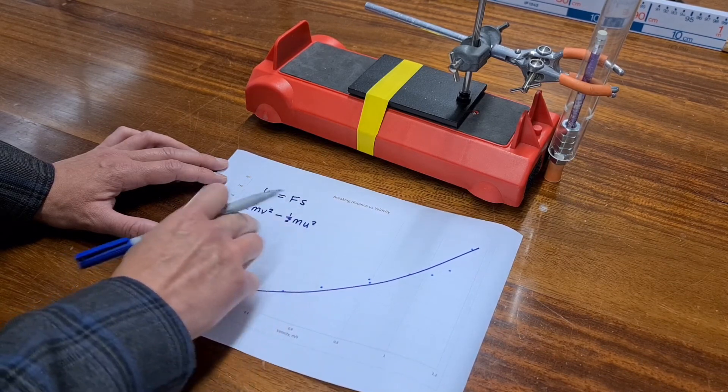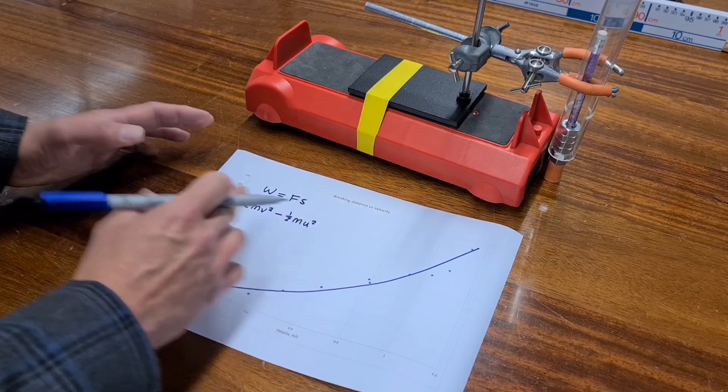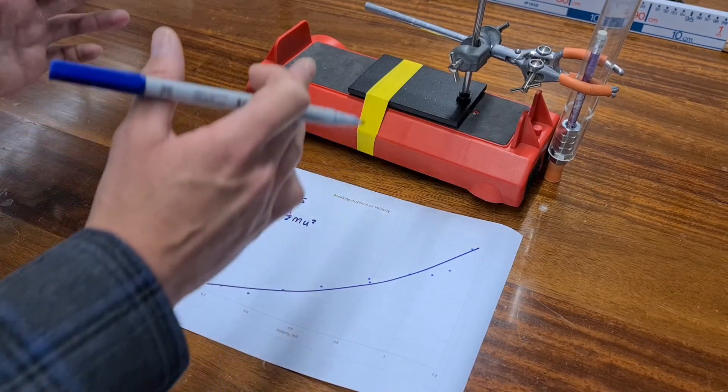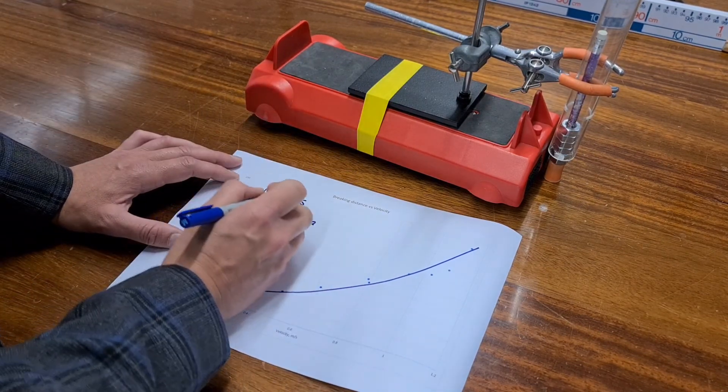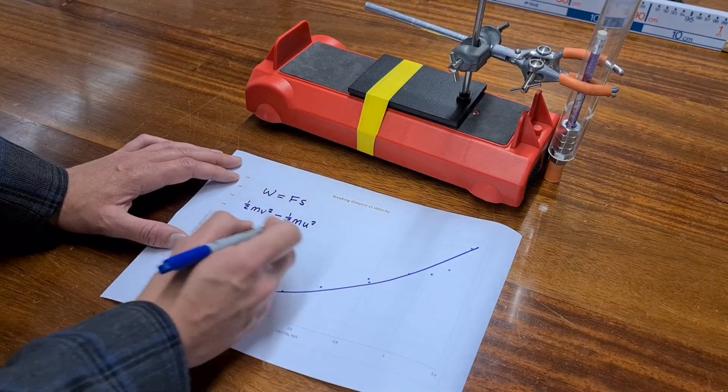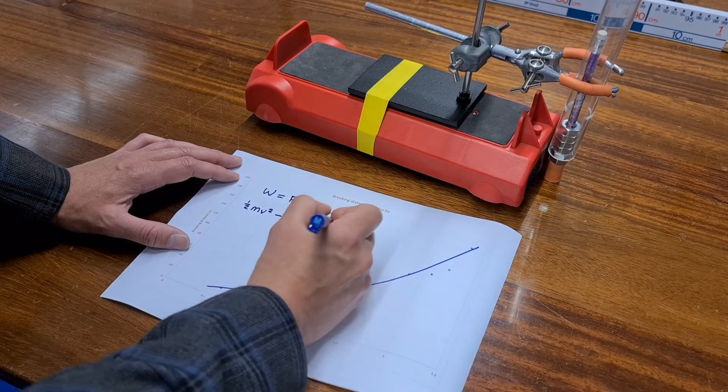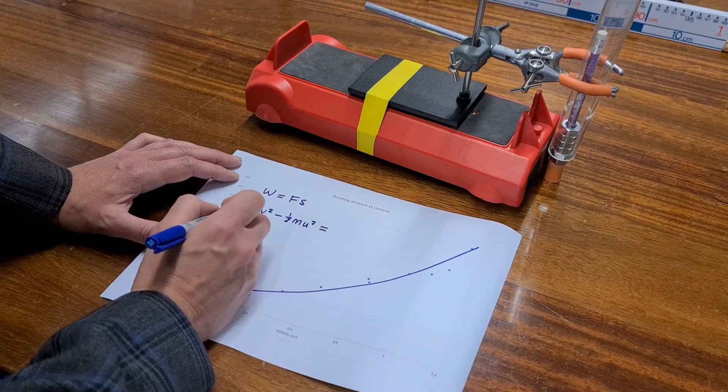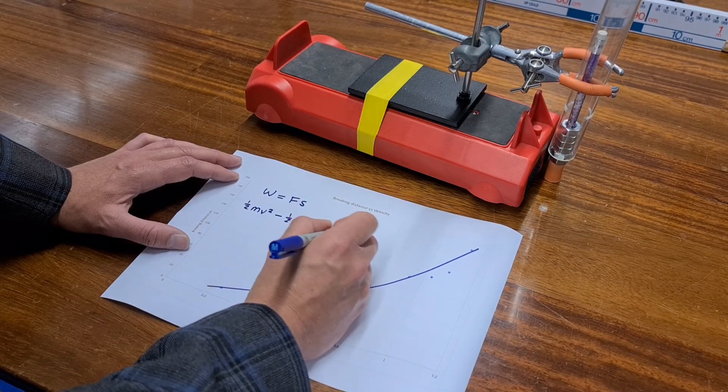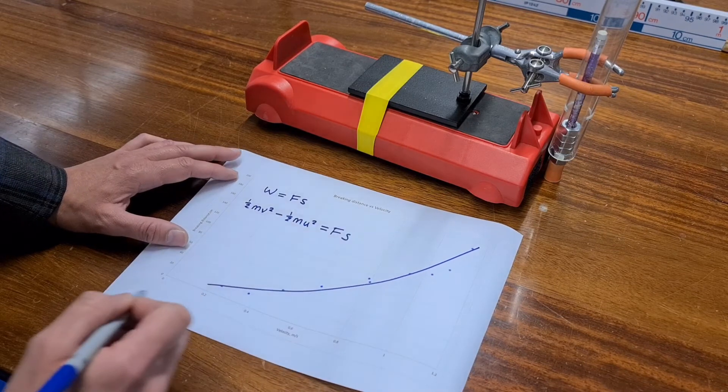And that would be minus a half mu squared, which is the kinetic energy that represents the initial velocity. And all this does, by having one kinetic energy minusing the other one, is just looking at the difference. Because that is what this braking force is going to do. It's going to change the velocity and it's going to change the kinetic energy. Because that is the work done, that is equal to the force times the displacement.